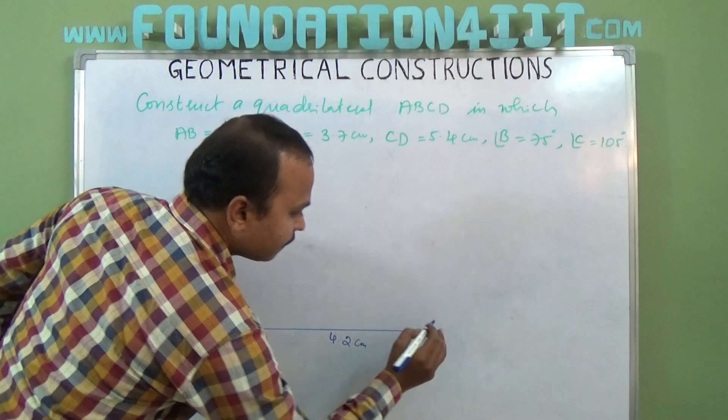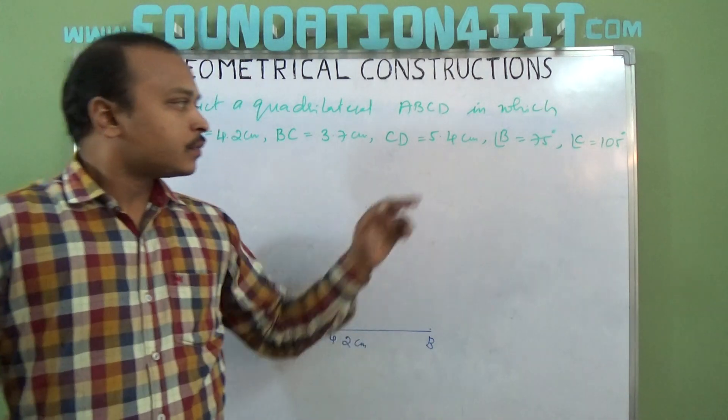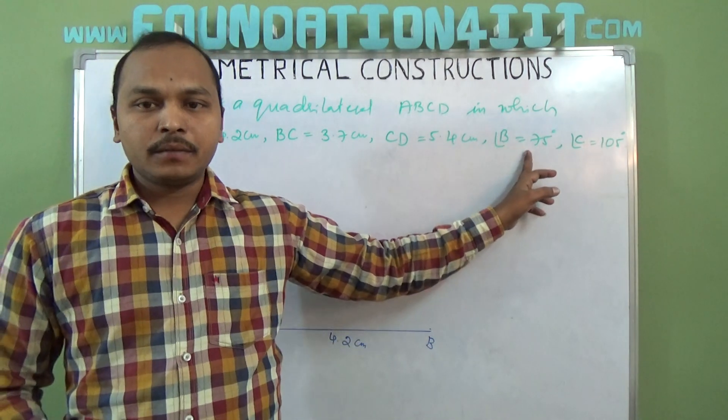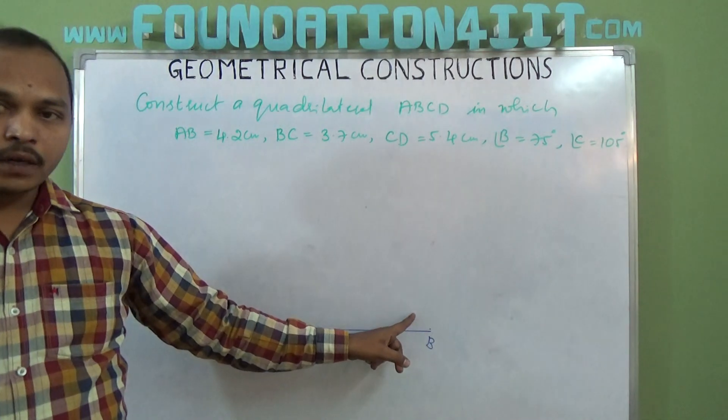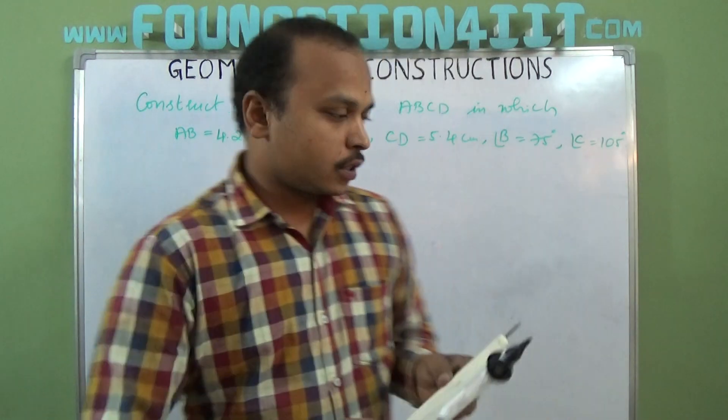So A and B vertices are marked. Now we also need C and D vertices but here angle B is 75 degrees, so at the vertex B I need to construct 75 degrees first. You know already how to construct 75.